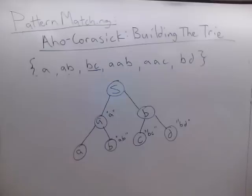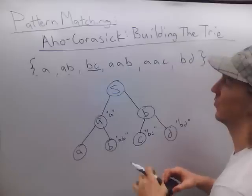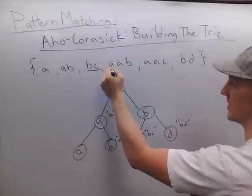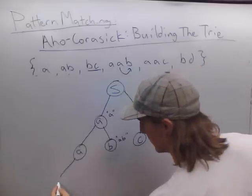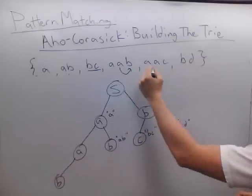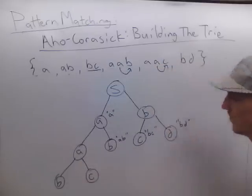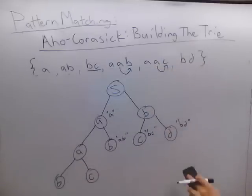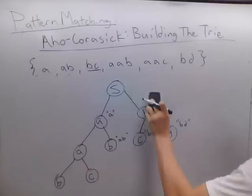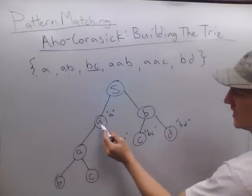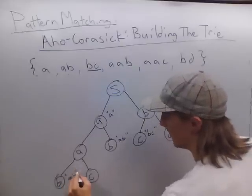Now I'm going to continue this recursively again. Once I've seen A and then A again, what letter can I see after that? Once I see AA, I can see a B or a C. Both of these cases terminate a word from our dictionary — AAB and AAC. So for the AAB node, I add the output to that node.